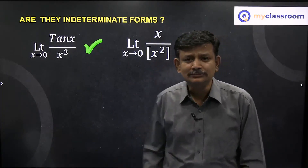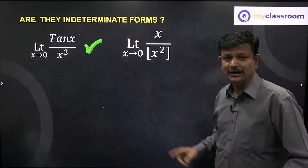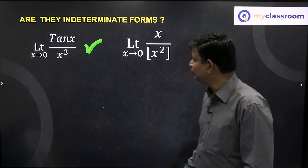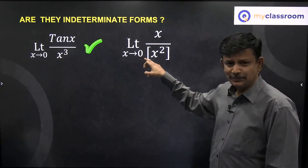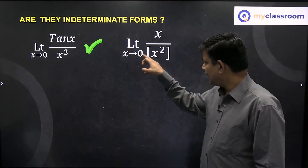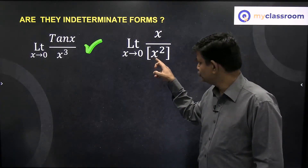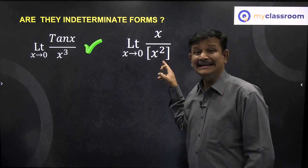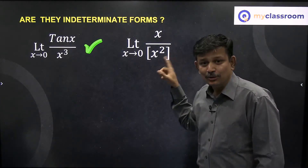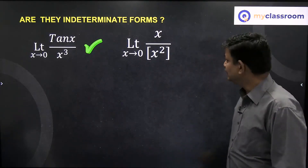Another example: limit as x tends to 0 of x by the integer part of x squared. As x approaches 0, the numerator x approaches 0. The denominator — x squared is a small positive quantity close to 0, and the integer part of that is 0. It is not approaching 0; it is 0. So this is not an indeterminate form.